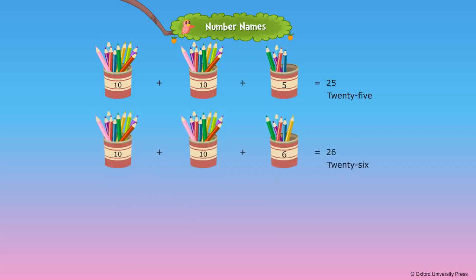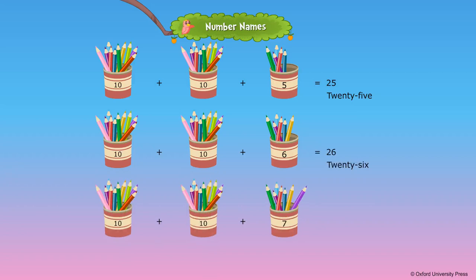20 plus 6 is equal to 26. 20 plus 7 is equal to 27.